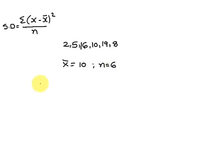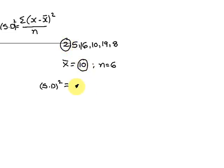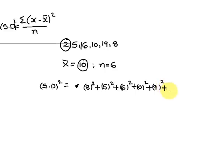We calculate σ² = Σ(x − x̄)² / n. Substituting: (2−10)² + (5−10)² + (16−10)² + (10−10)² + (19−10)² + (8−10)² = (−8)² + (−5)² + (6)² + (0)² + (9)² + (−2)² = 64 + 25 + 36 + 0 + 81 + 4.